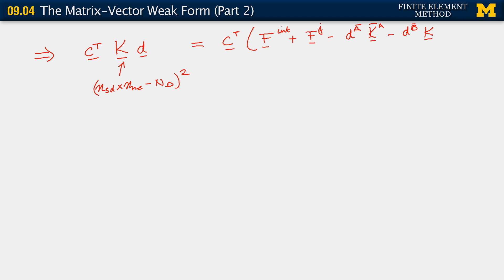just that scalar multiplying the K bar A bar column minus D B bar, multiplying the K bar B bar column. And this finally is our full F vector. Also with dimensions NSD times NNE minus ND. And this has to hold for all C belonging to that same space of the same dimension.